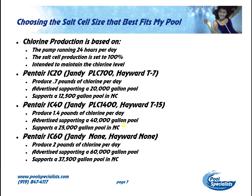Pentair makes an IC60 — Jandy and Hayward don't have an equivalent — which produces two pounds of chlorine per day. It's advertised as supporting a 60,000 gallon pool in New Jersey; in North Carolina it supports a 37,000 gallon pool, and in southern Florida or Texas it supports a 30,000 gallon pool. Be aware that these numbers are all based on the latitude of New Jersey, and once you go further south you'll require a larger cell.